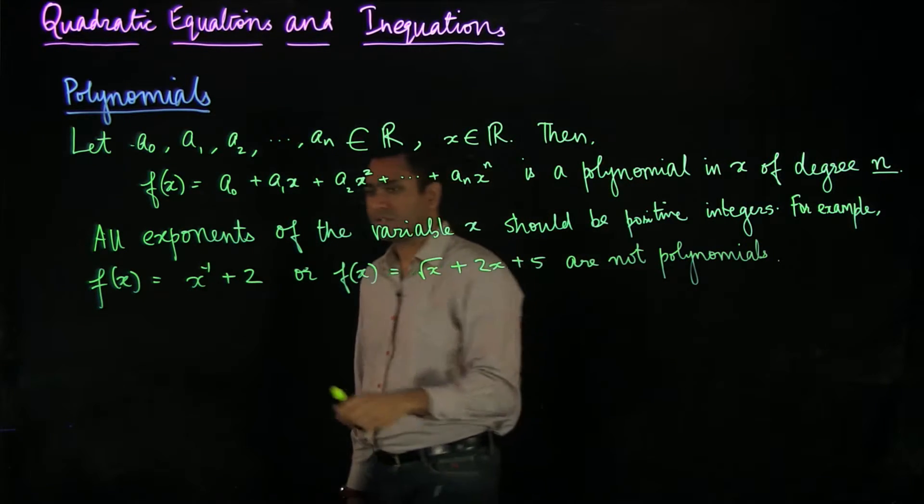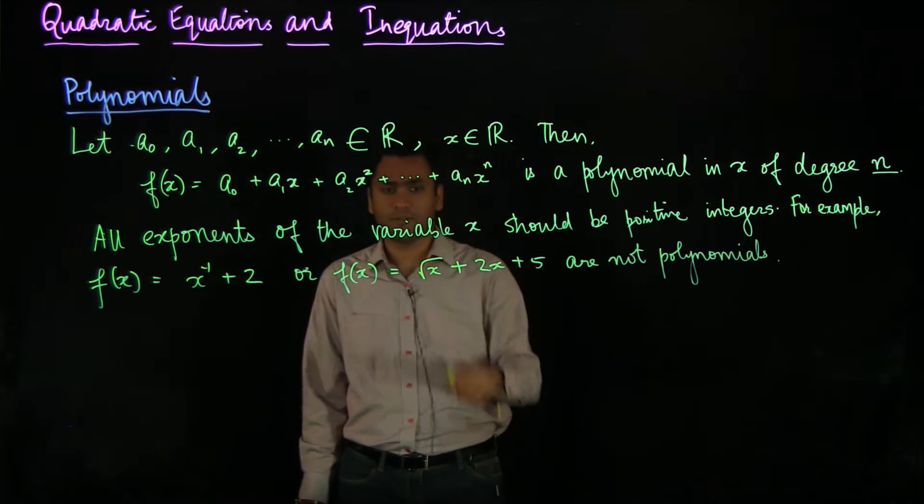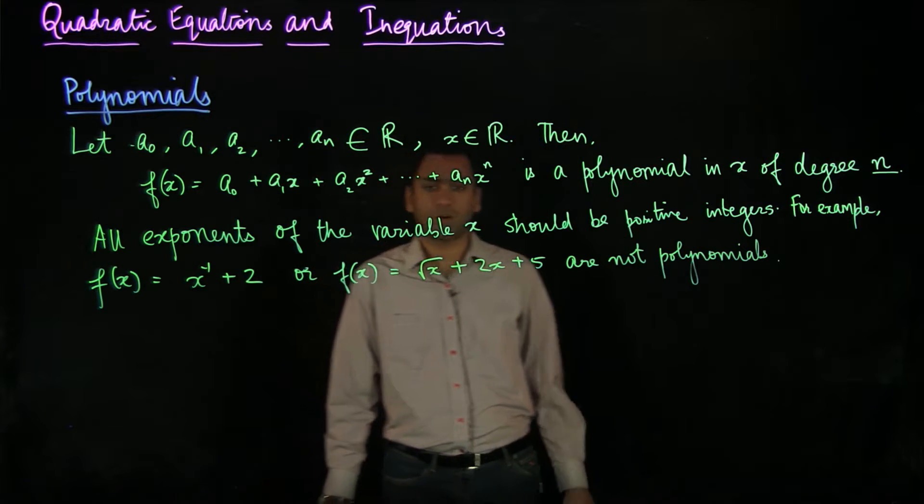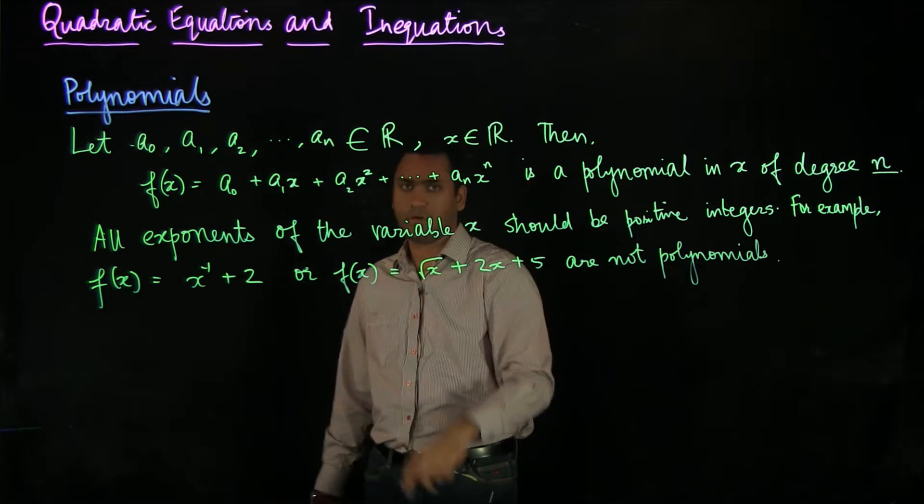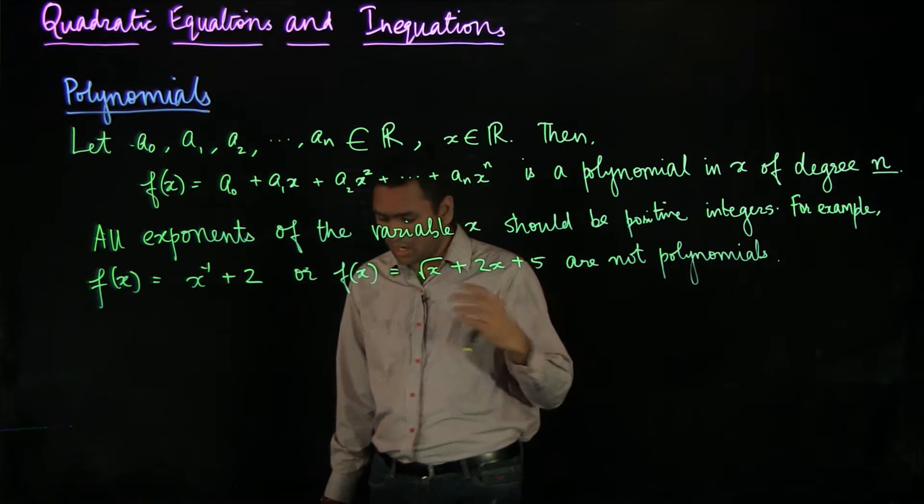Why is that? Because here the exponent is negative - x to the minus 1 means that the exponent is negative - or here the exponent is not an integer, it is half or so that is how the square root is defined and that is why these two are not polynomials.